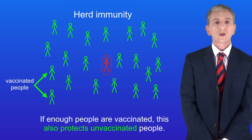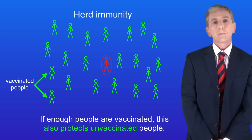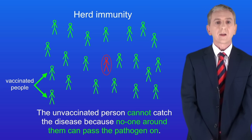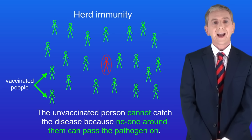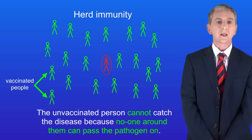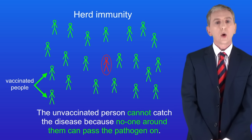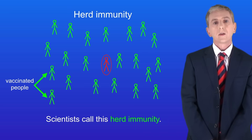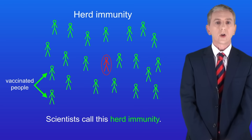The person shown in red has not been vaccinated but every person near them has. That means that the unvaccinated person cannot catch the disease because no one around them can pass the pathogen on. Scientists call this herd immunity.